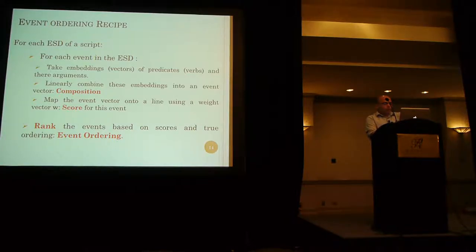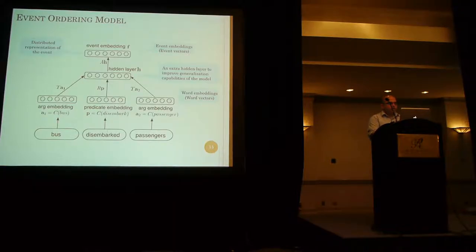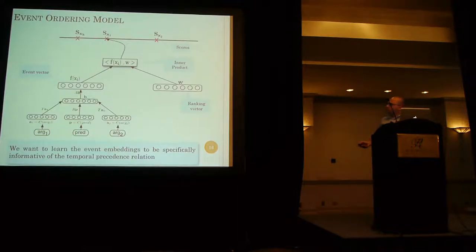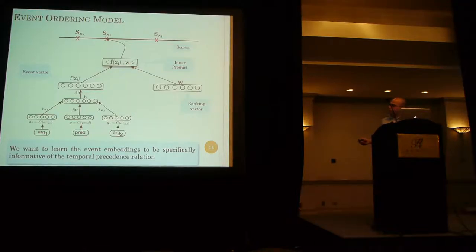The ranking error is backpropagated through the network to update the parameters. So here is the model: you can see that we have the verb 'disembark' and the arguments 'bus' and 'passenger.' We map them to the word embeddings and then combine them to get the event vector. Once we have this event vector, we map it to a score using a ranking vector. When we have the scores for all the events, we order them and backpropagate the ranking error to the network to update the parameters.